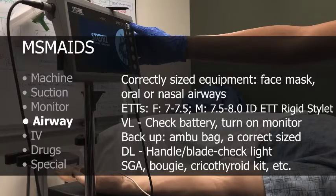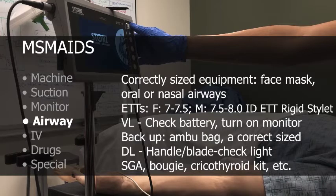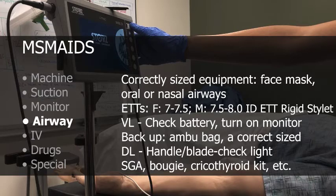While most of this airway section correlates with direct laryngoscopy, what is unique to video laryngoscopy, or VL, is the use of a monitor for indirect visualization of the airway and the therefore necessity to turn it on prior to use. This is to ensure the screen and camera are fully functional and have sufficient battery life. A specialized rigid stylet is also used for intubation via VL and should be inserted into the ETT. Like intubation via direct laryngoscopy, a 10 ml syringe should also be attached to the pilot balloon.